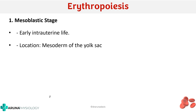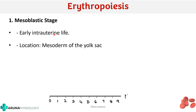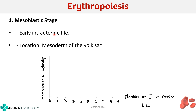The first is the mesoblastic stage. This occurs in the early intrauterine life, and the site of erythropoiesis is the yolk sac — specifically the mesoderm of the yolk sac. To show this concept, you can draw a graph with the months of intrauterine life on the x-axis and hematopoietic activity on the y-axis. The yolk sac shows a peak at around one month.